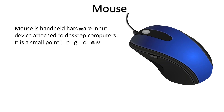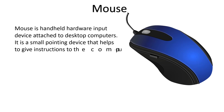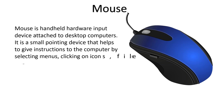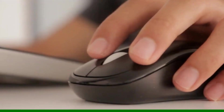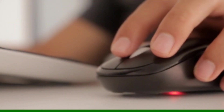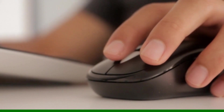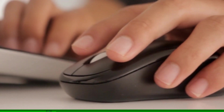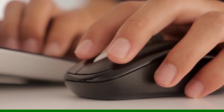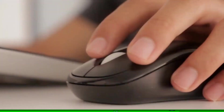The mouse is another important hardware of the computer system, attached to the desktop computer. It is a small pointing device that helps give instructions to the computer by selecting menus, clicking on icons, files, and folders on the screen. It is a handheld device that allows us to give instructions to our computer system.